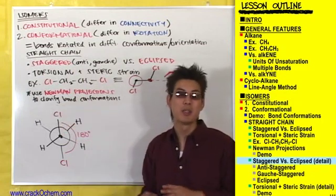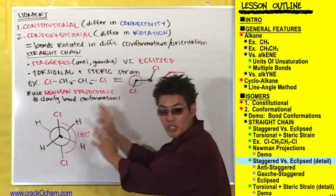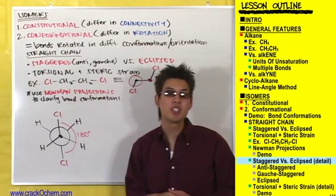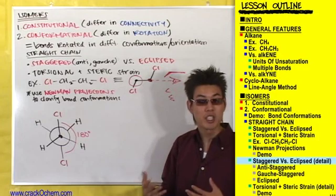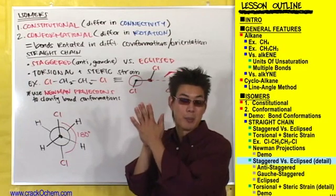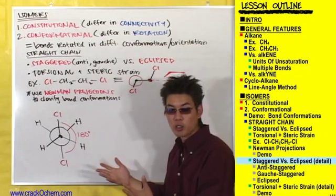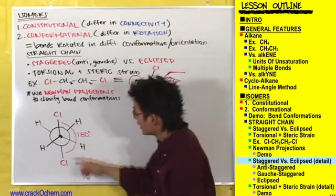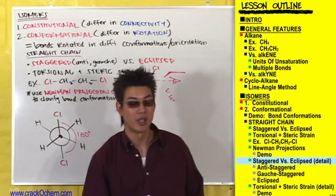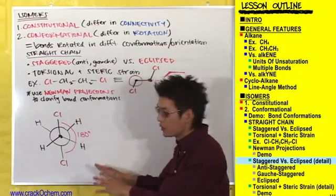If it's staggered, it can also be either anti-staggered or gauche-staggered. Can anyone guess what conformation this Newman projection is in, with the largest substituents — these chlorines — pointing in opposite directions and as far away from each other as possible? A staggered conformation has no overlapping bonds. An eclipsed conformation has overlapping bonds — that's why they call it eclipsed, because it's overlapping. Do you see any bonds here that are overlapping, that are right on top of each other? No — this hydrogen is pointing this way, this hydrogen is pointing this way, this chlorine is pointing this way, and so on. All these bonds are staggered; they're all pointing different directions.